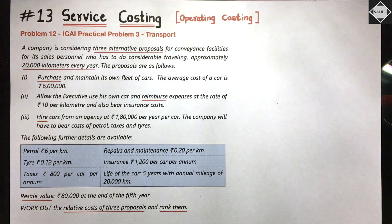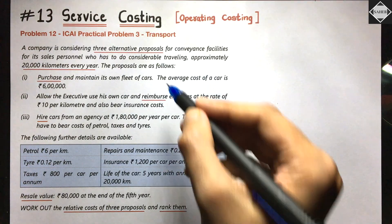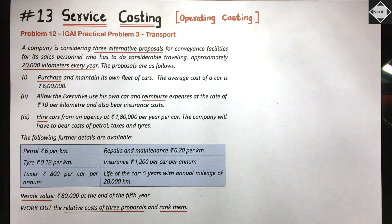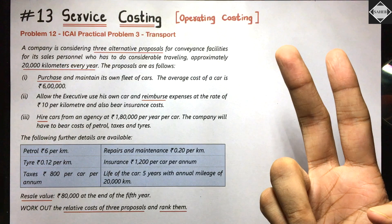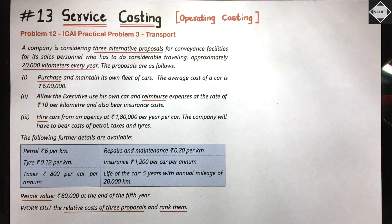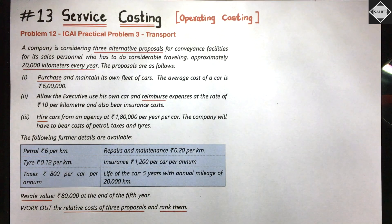The requirement is to work out the relative cost of the three proposals and rank them. The ranking is simple: the proposal with the lowest cost gets rank one, the next lowest gets rank two, and the highest cost gets rank three. The proposal recommended to the company will be rank one — the one with the lowest cost.